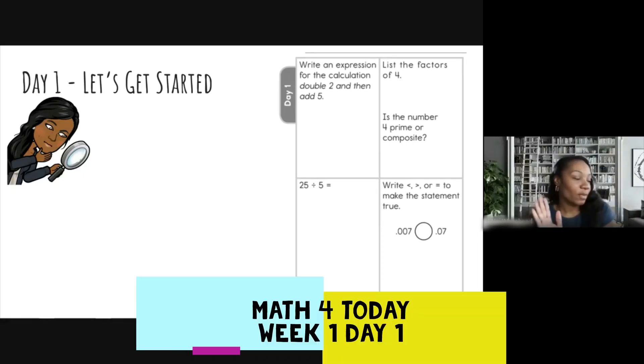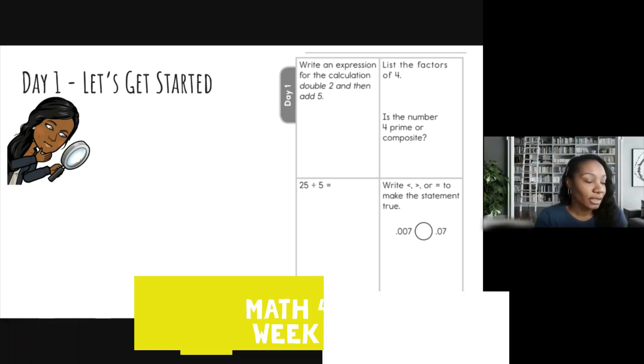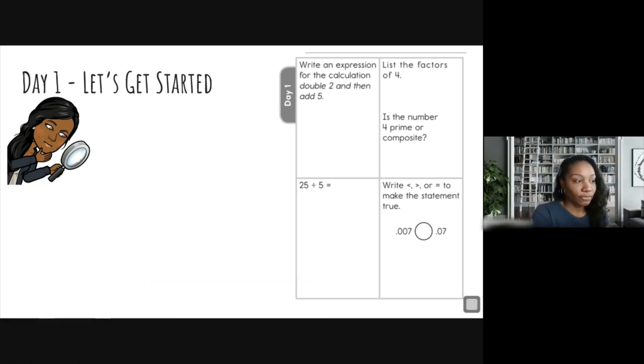Okay, hello everyone and welcome back to Math for Today. This is for fifth grade, day one. So let's look at the question. It says to write an expression for the calculation: double two and then add five. So we're going to do exactly what it tells us to do.